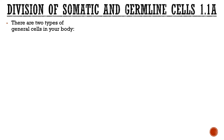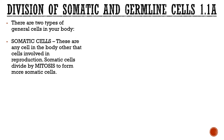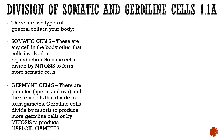Let's get started on the very first part of the Higher Human Biology course: the division between somatic and germline cells. Generally speaking, throughout the entirety of your body there are two overarching types of cells. Somatic cells are basically everything not involved in reproduction — sperm and egg cells aren't included. Somatic cells divide by mitosis. If you're unsure what mitosis is, have a quick look back at National 5 Biology.